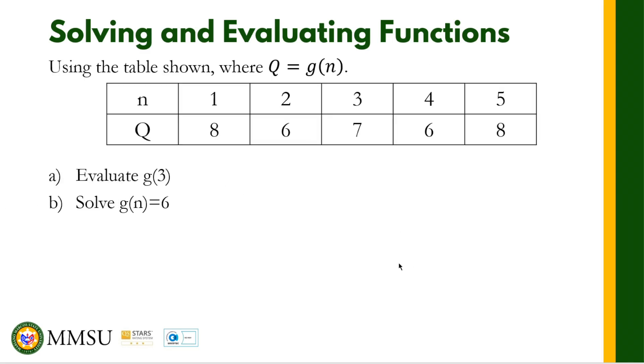So how do we do this when we are given a table? Using the table shown where Q is equal to G of N, letter A, evaluate G of 3 and letter B, solve G of N is equal to 6.